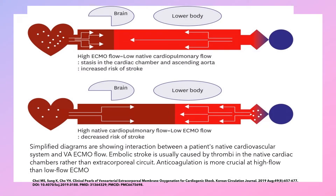This simplified diagram shows the interaction between the patient's native heart and VA ECMO flow. In the first scenario, the heart begins to eject and the brain is affected by deoxygenated blood. With high ECMO flow, there is stasis in the heart, increasing the risk of stroke. In the second scenario, as the heart ejects more, the stroke risk decreases, but the brain remains affected by deoxygenated blood. Patients on high ECMO flow should receive anticoagulation to reduce stroke risk.